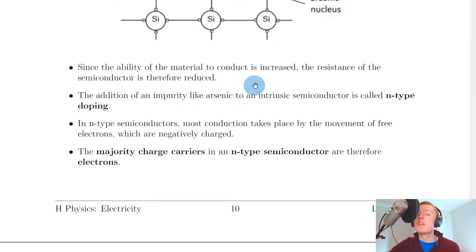Since the ability of the material to conduct is increased, the resistance of the semiconductor is therefore reduced. Remember these two things, conductivity and resistance, are sort of like opposites. The addition of an impurity like arsenic to an intrinsic semiconductor is called n-type doping.